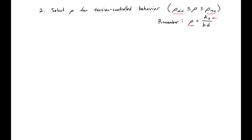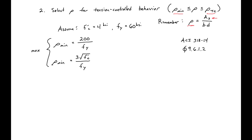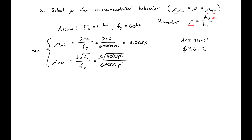For this step we assume a concrete strength of 4 ksi and a yield strength of 60 ksi. Using the ACI expressions for rho_min: the first expression, 200/fy, gives 0.0033, and the second expression using √f'c / fy with 4,000 psi concrete and 60,000 psi yield strength gives 0.0032. The value 0.0033 controls, so that'll be our rho_min.